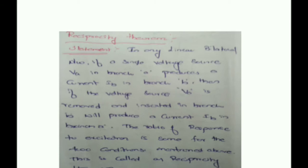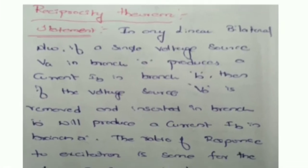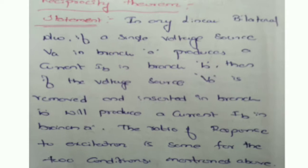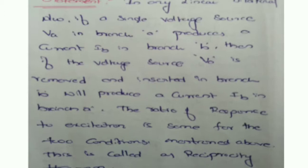Good morning. Here we are going to discuss the Reciprocity Theorem. First of all, the Reciprocity Theorem statement: In any linear bilateral network, if a single voltage source VA in branch A produces a current IB in branch B, then if the voltage source VA is removed and inserted in branch B, it will produce a current IB in branch A. The ratio of the response to the excitation is the same for both conditions. This is called the Reciprocity Theorem.